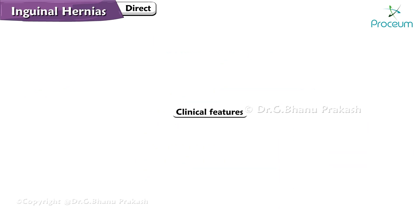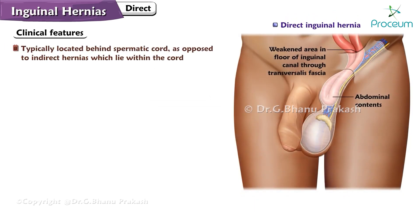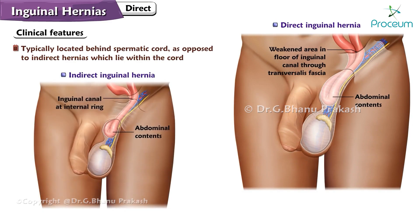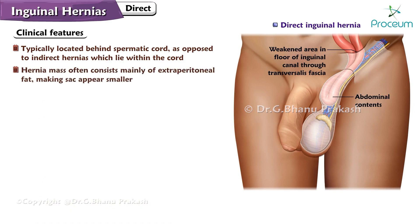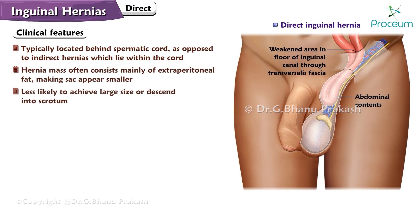Clinical Features: Direct inguinal hernias are typically located behind the spermatic cord, as opposed to indirect hernias which lie within the cord. The hernia mass often consists mainly of extraperitoneal fat, making the sac appear smaller. These hernias are less likely to achieve a large size or descend into the scrotum.